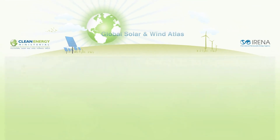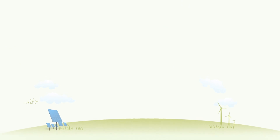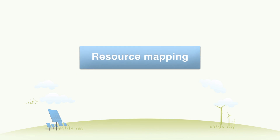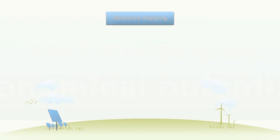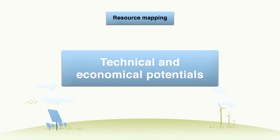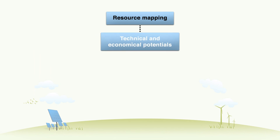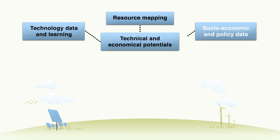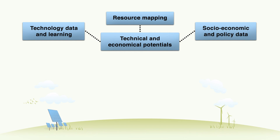What is necessary to get renewable energy to work? The first step is to know about the available resources and to create maps of the available resources. The second step is to analyze the technical and economic potential. This requires knowledge about renewable technologies and their development in the future on one side, and socio-economic data and policy information on the other side. This is where the Global Atlas brings the most added value.